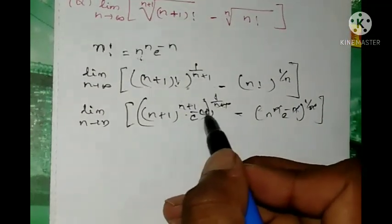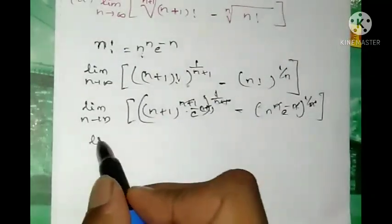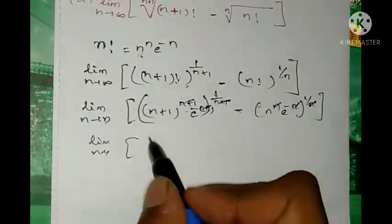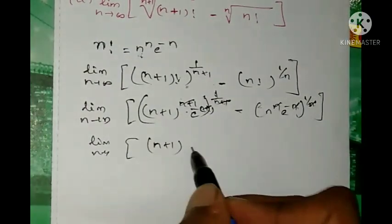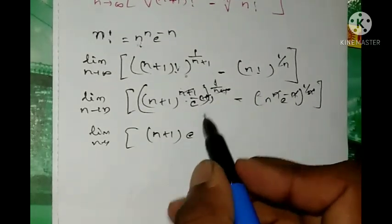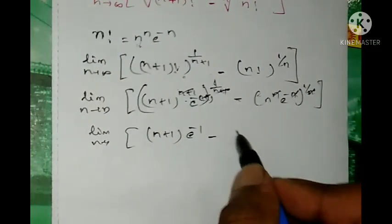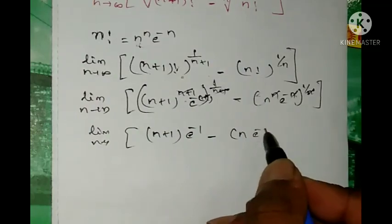n gets cancelled and we get (n+1) times e to the power of minus 1, minus n times e to the power of minus 1.